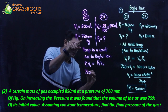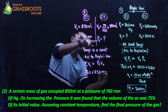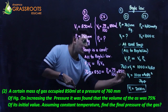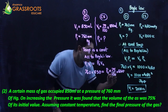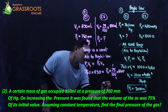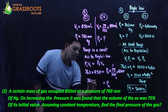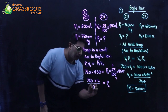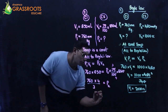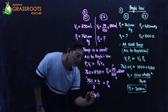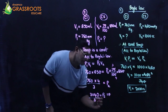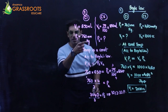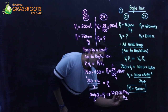Substituting: 760 × 850 = P2 × (75/100) × 850. The 850 cancels on both sides. Cross-multiplying gives P2 = 760 × (4/3) = 3040 / 3 = 1013.33 mmHg.